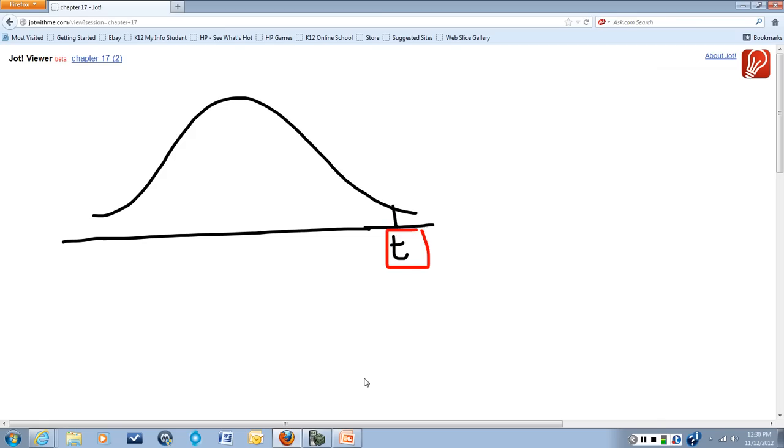That corresponds to having 99% fall between it and its counterpart. Because this is a symmetric distribution, its counterpart on the negative end. That leaves 1% for the tails. That means we have 0.5% in that tail.